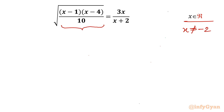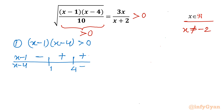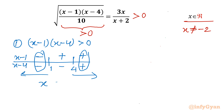Second condition: the radicand should be positive, and the right-hand side must also be positive. So let us find the interval where x is defined for real solutions. The first condition is (x minus 1)(x minus 4) should be positive. Drawing a number line with critical points 1 and 4: once x is greater than 1, (x minus 1) is positive; once x is greater than 4, (x minus 4) is positive. The product is positive when x is less than 1 or greater than 4. So x should not lie between 1 and 4 — that interval is excluded.